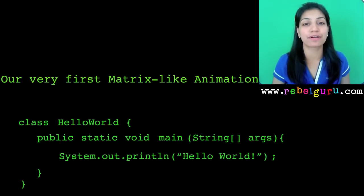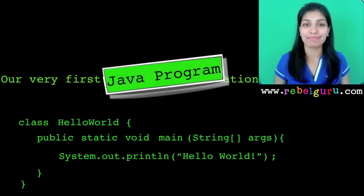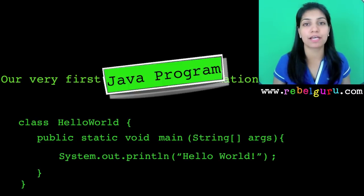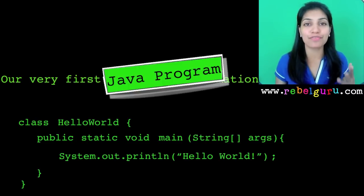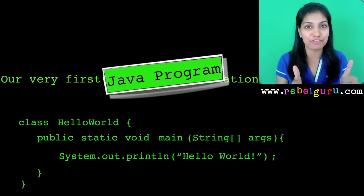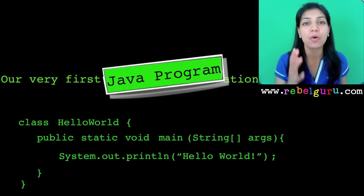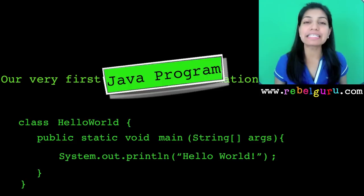So it's time to look at Java's Hello World program, our first program, in a very Matrix-y fashion. As you can see, the syntax of Java is very similar to that of C++. So those of you who are familiar with C++ from your previous semester, good for you — but for others, we'll go over this program word by word.